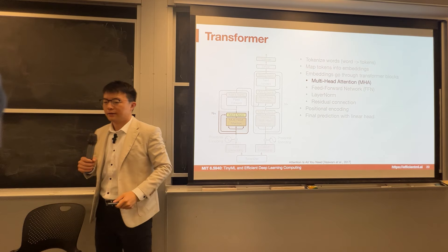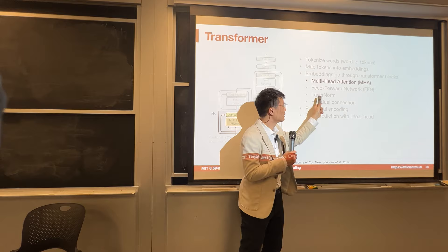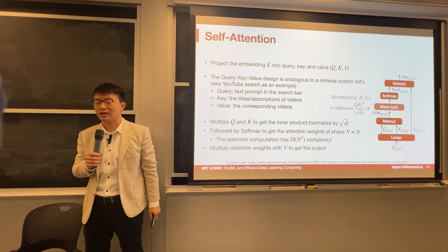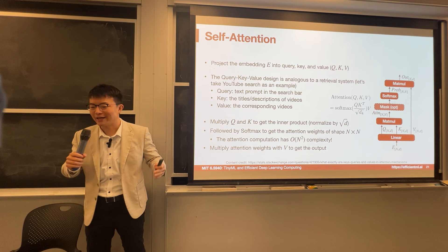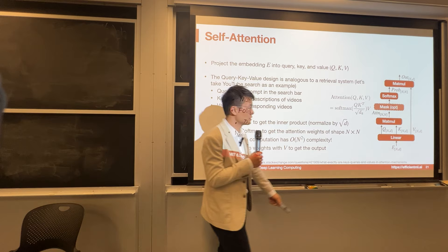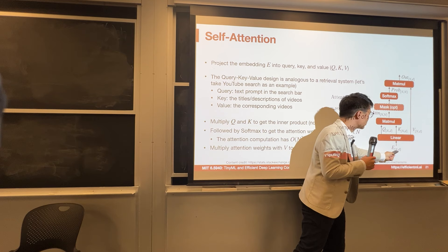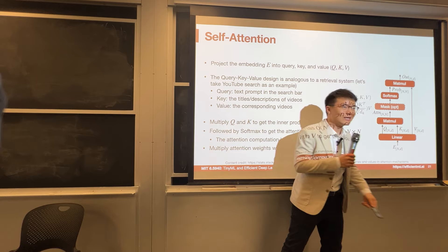Now comes the multi-head attention — the building block of the transformer block, including multi-head attention, FFN, layer norm, and residuals. We have a word embedding vector — maybe 4K dimensions — and we project that into query, key, and value: three separate vectors. We project by three matrices Q, K, V, turning the number-of-tokens by hidden-dimension into three separate vectors called Q, K, V.